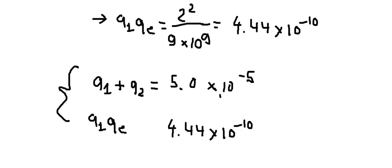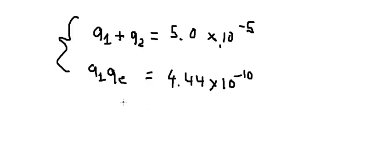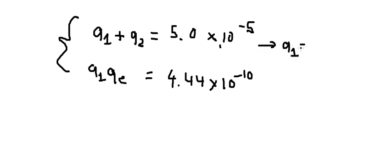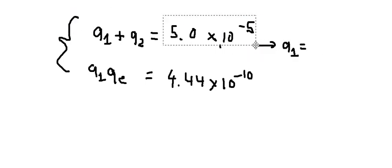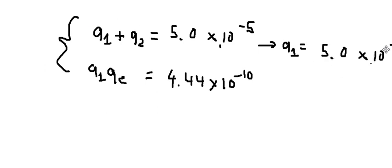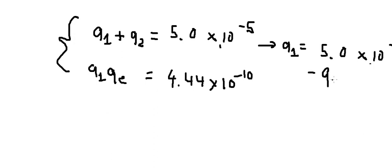Now we need to find charge number one and charge number two. I will rearrange so that charge number two goes to the right side. So we have charge number one equals the total minus charge number two. We then substitute this expression for charge number one into the second equation.